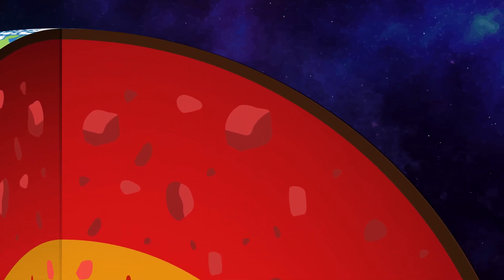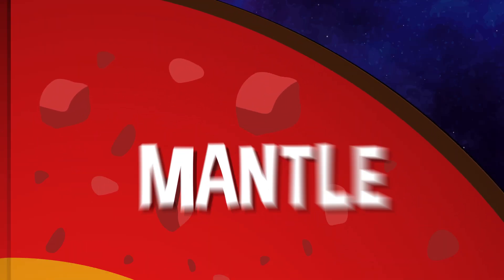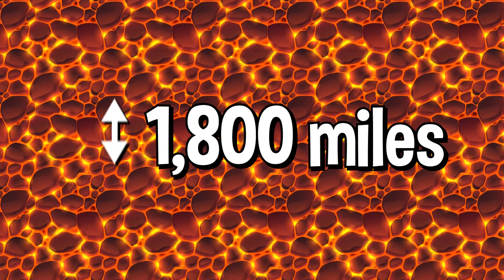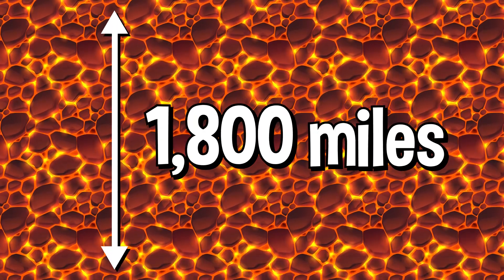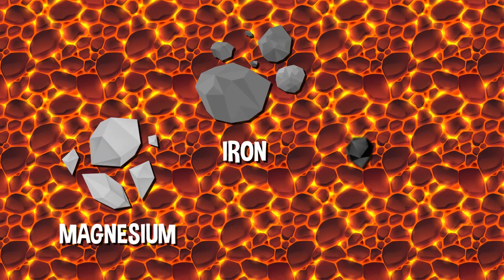Below the crust is the largest layer, the mantle. It's also mostly solid rocks and minerals mixed with soft, semi-solid areas of molten magma. The mantle is over 1,800 miles thick and is mostly made up of elements like iron, magnesium, and silicon.